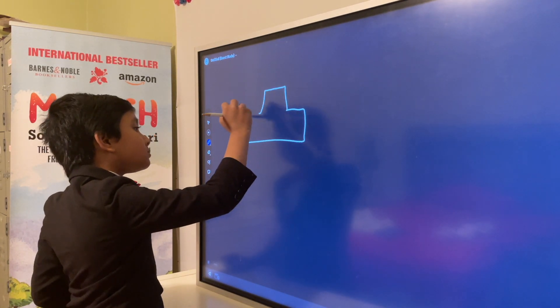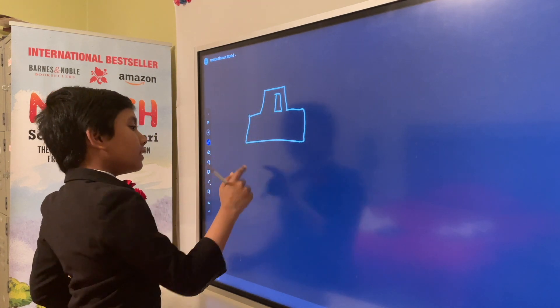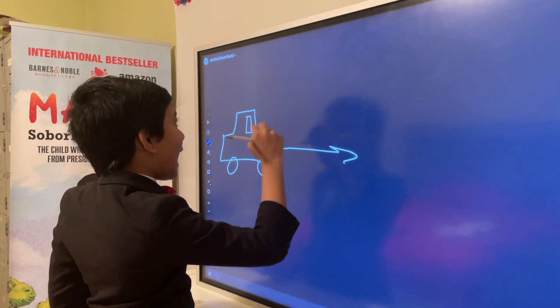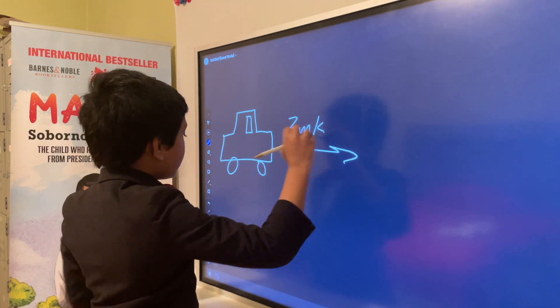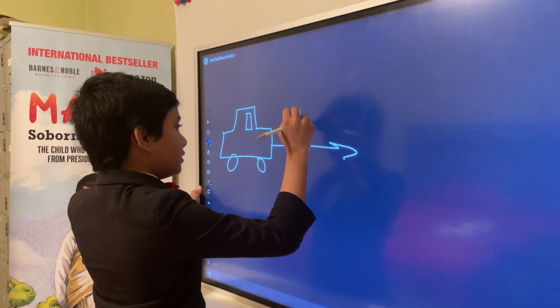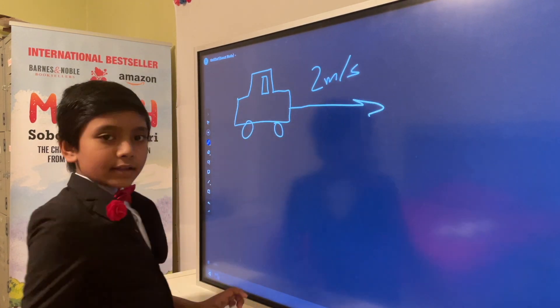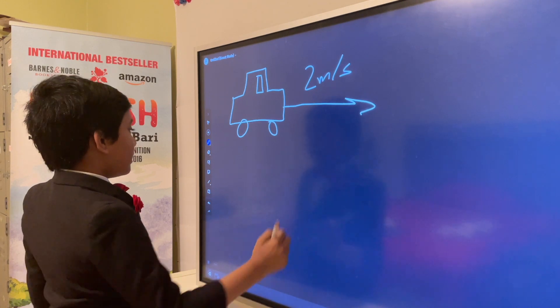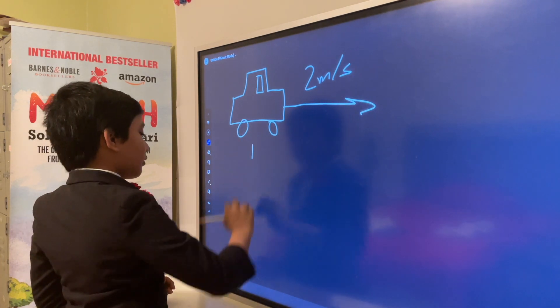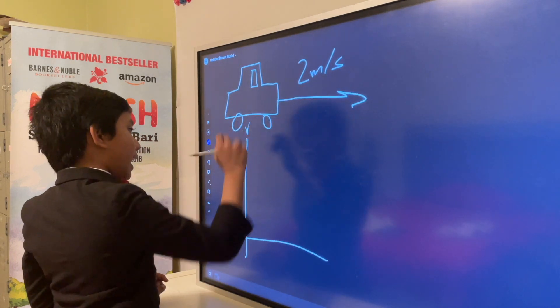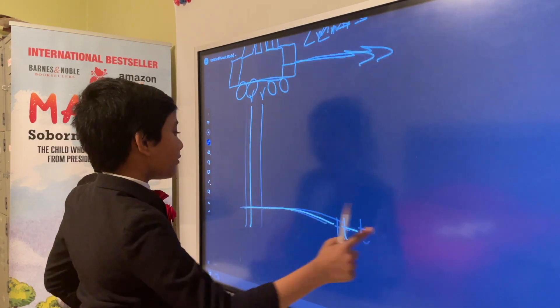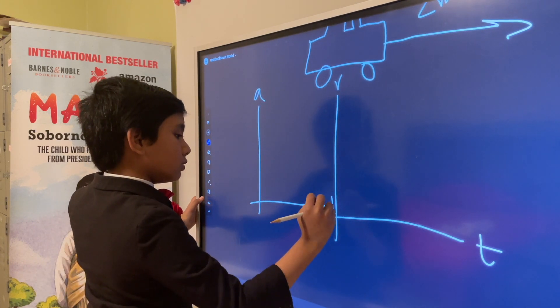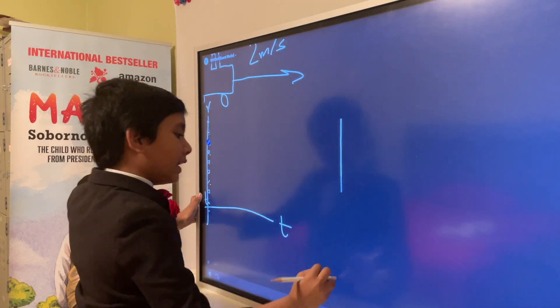First scenario, let's say that you have a car traveling at 2 meters per second. So now if we take 2 meters per second, let's graph that. Here is our velocity over time graph, our acceleration over time graph, and our distance over time graph.